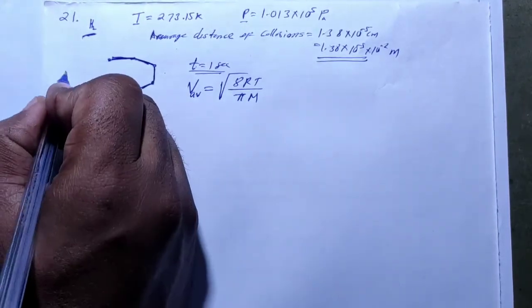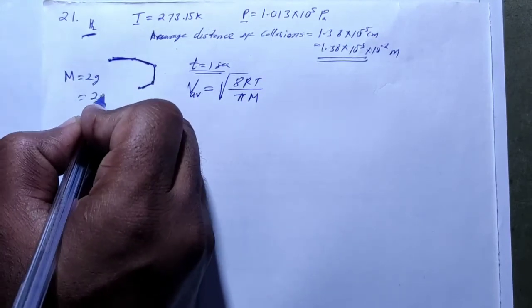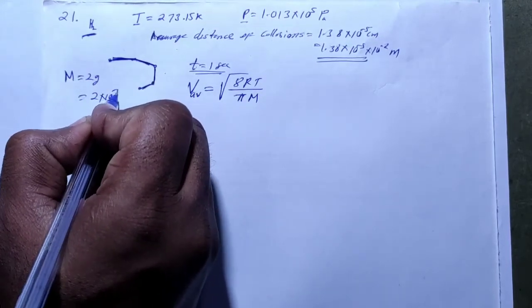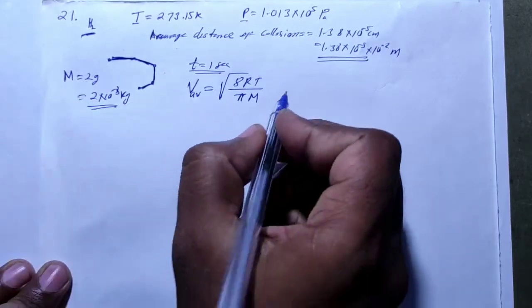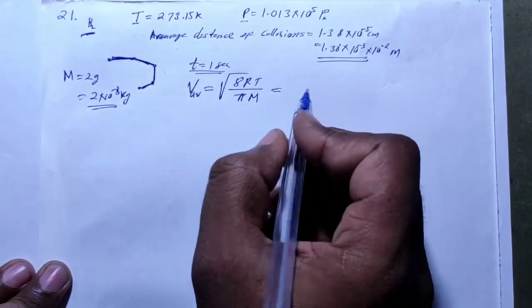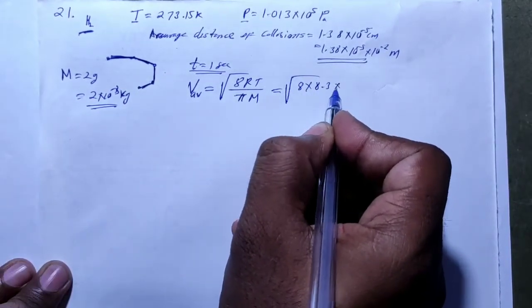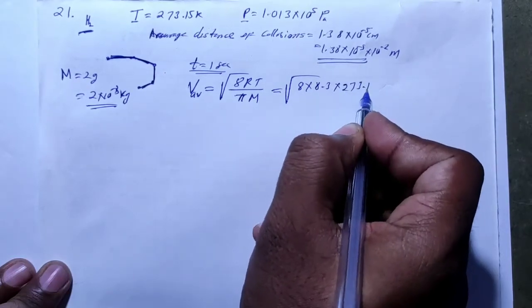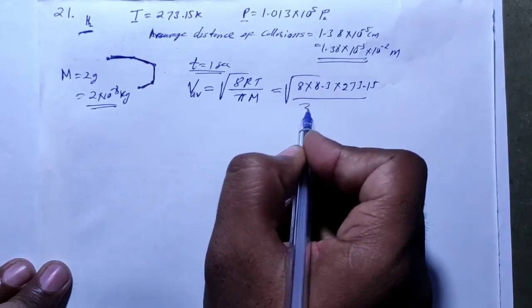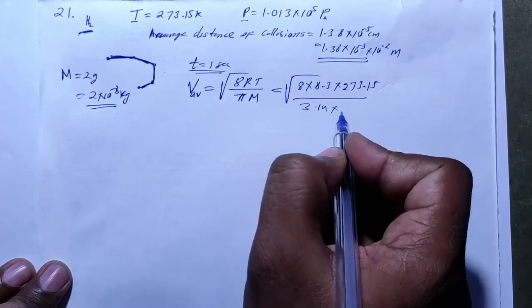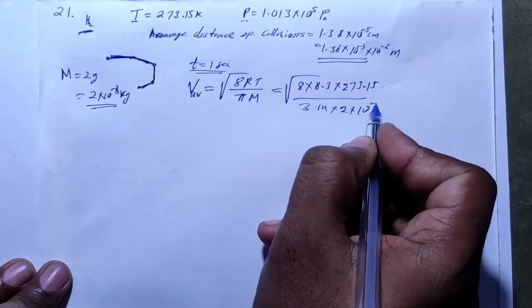Average speed equals √(8RT / πM). The molecular mass of hydrogen is 2 grams, or 2 × 10⁻³ kg. Substituting values: R = 8.3, temperature = 273.15 Kelvin, π = 3.14, and mass = 2 × 10⁻³ kg.